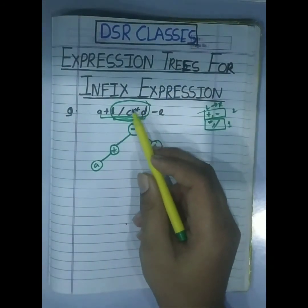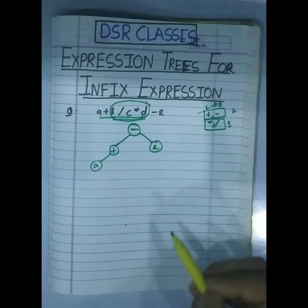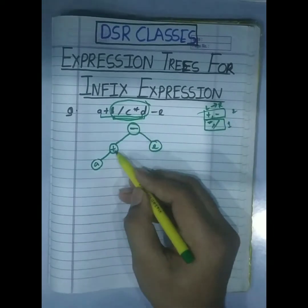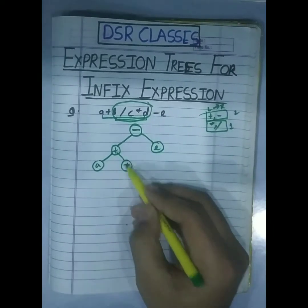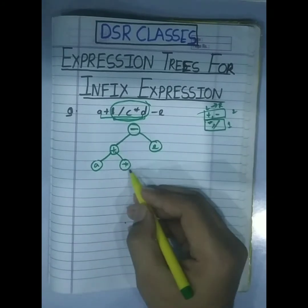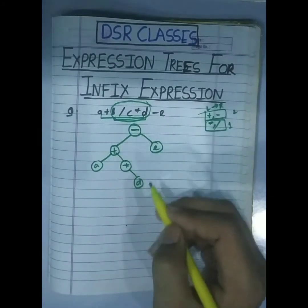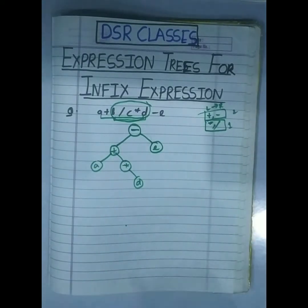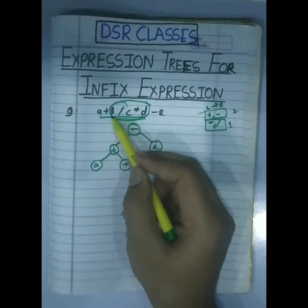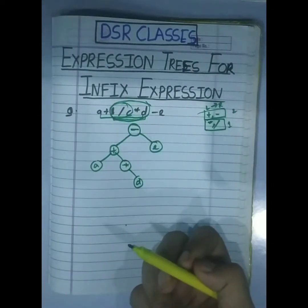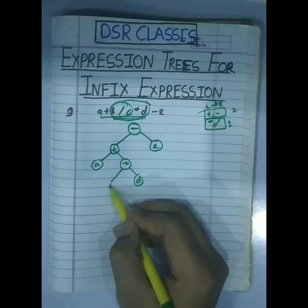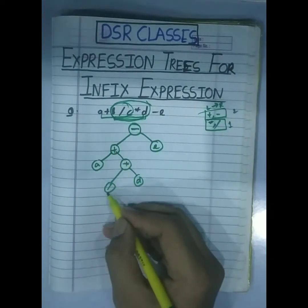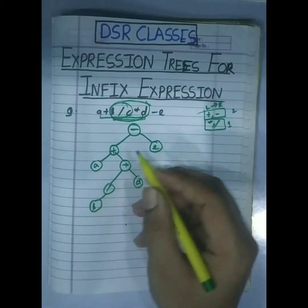Since divide and multiply have the same priority, we apply left to right associativity. Scanning left to right, multiply comes last, so multiply is the operator at this node. B divided by c goes to the left, and the right child of multiply gets its operand. So b divided by c: c is the right child, b is the left child, with divide as the operator.